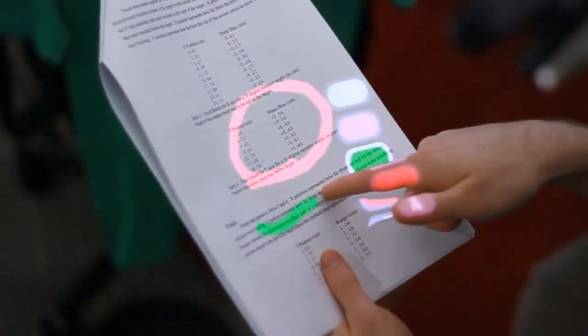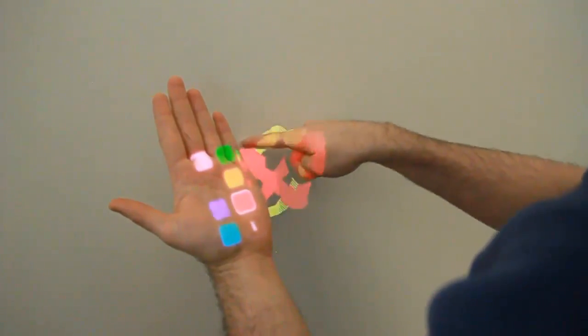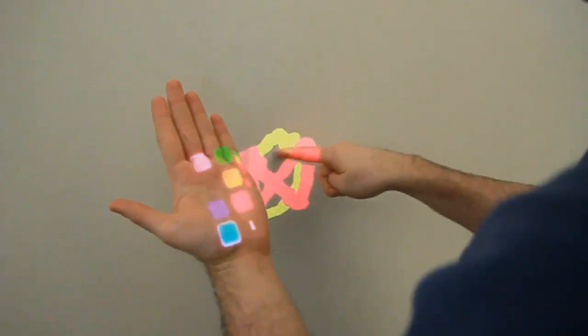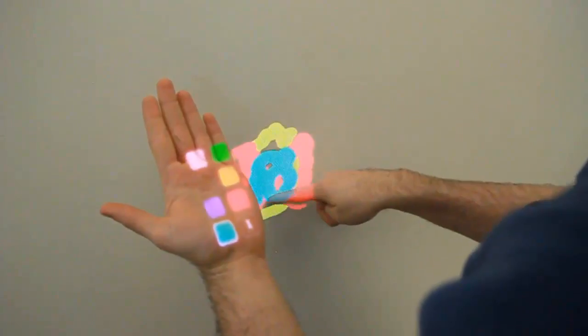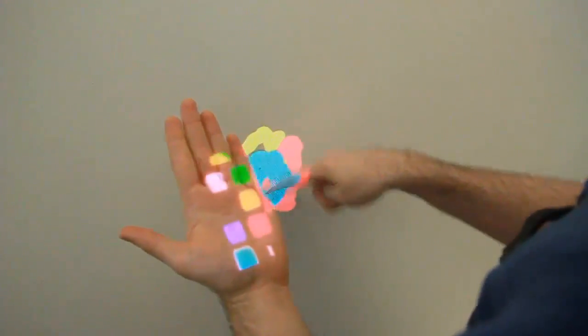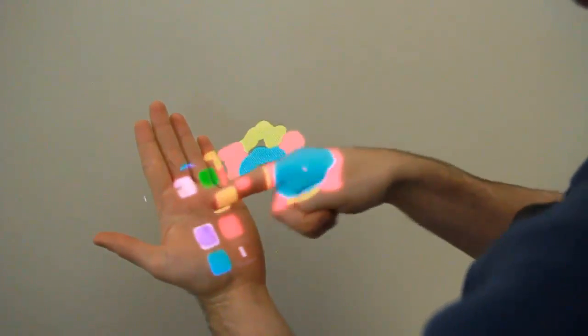If multiple surfaces are present in the system's field of view, applications could intelligently distribute functionality. For example, here a user is painting on a wall. The left hand could be raised to provide a palette of colors.